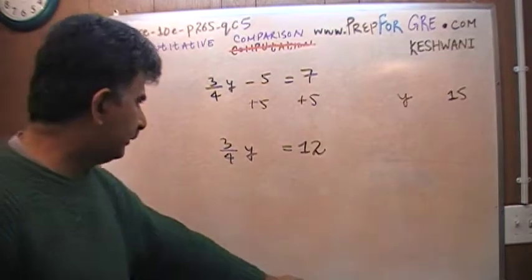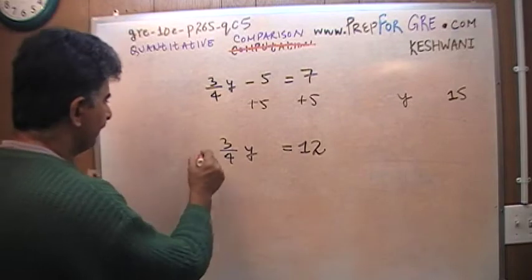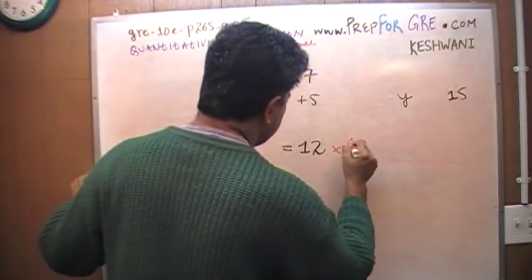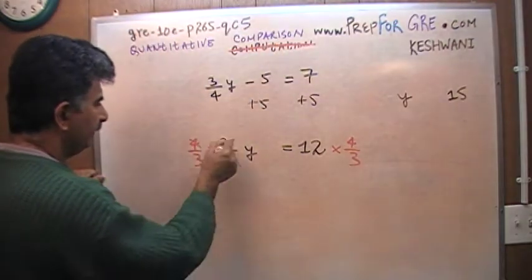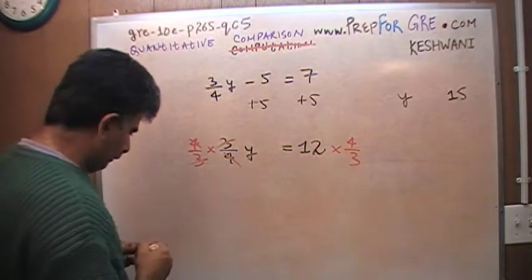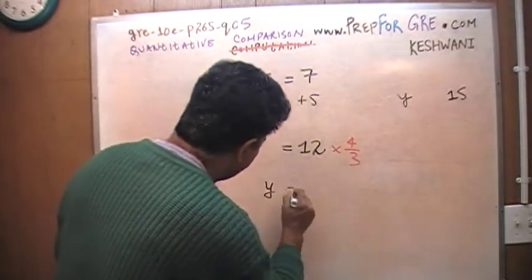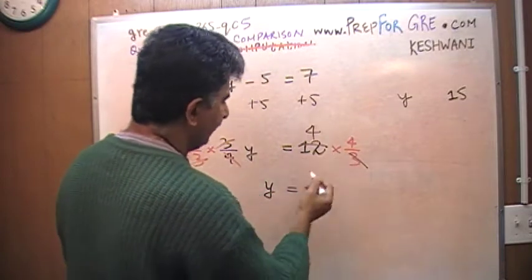And then how do I get rid of 3 quarters? Multiply both sides by the reciprocal. So that drops out with this one, this goes out with this one. So it's 4 times 4, it's 16.